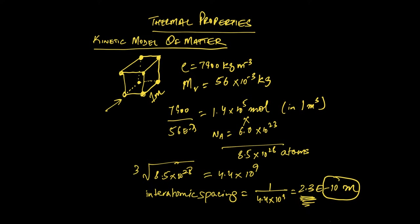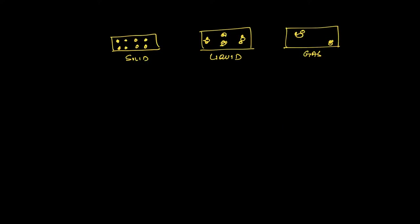You can take 10 to the minus 10 as an order of magnitude for the spacing of atoms in a solid, and you can do a similar calculation for liquids and gases. This brings us to the kinetic theory — a kinetic model of matter. It's used to explain why matter can exist in different phases: solid, liquid, and gas, and how matter can change from one phase to the next.